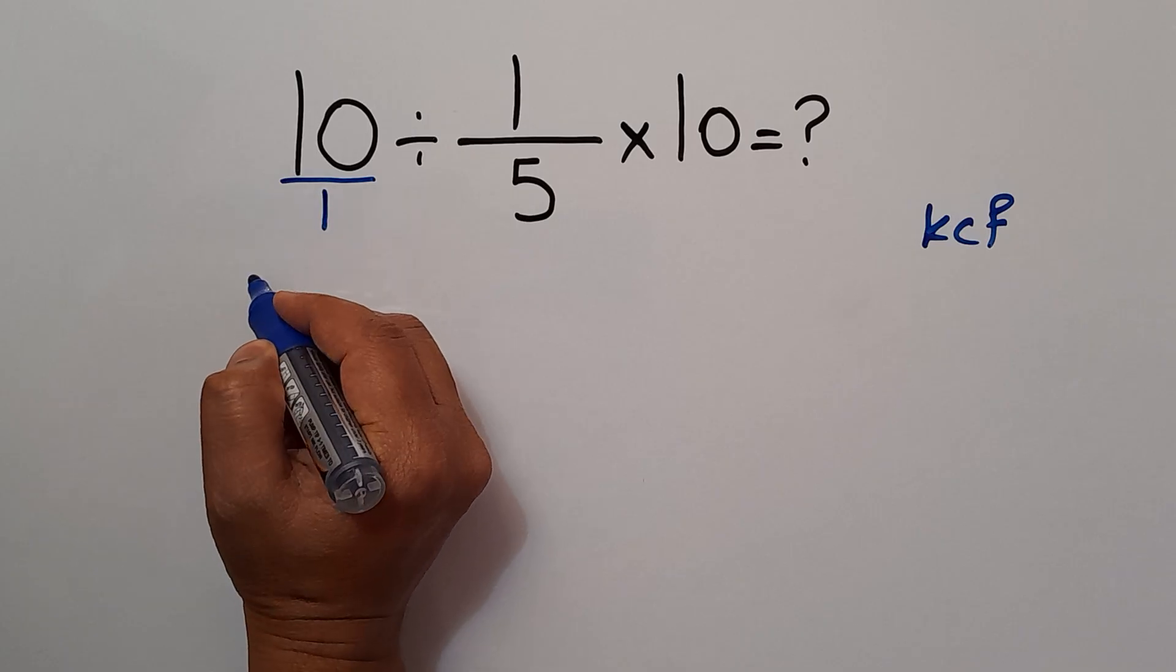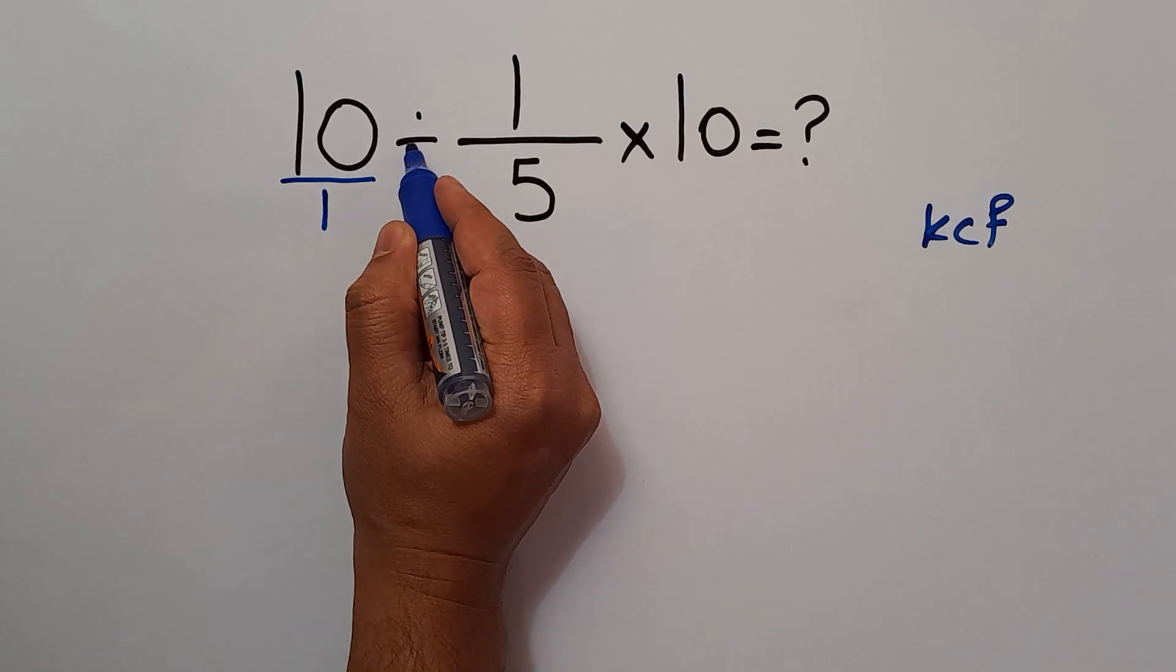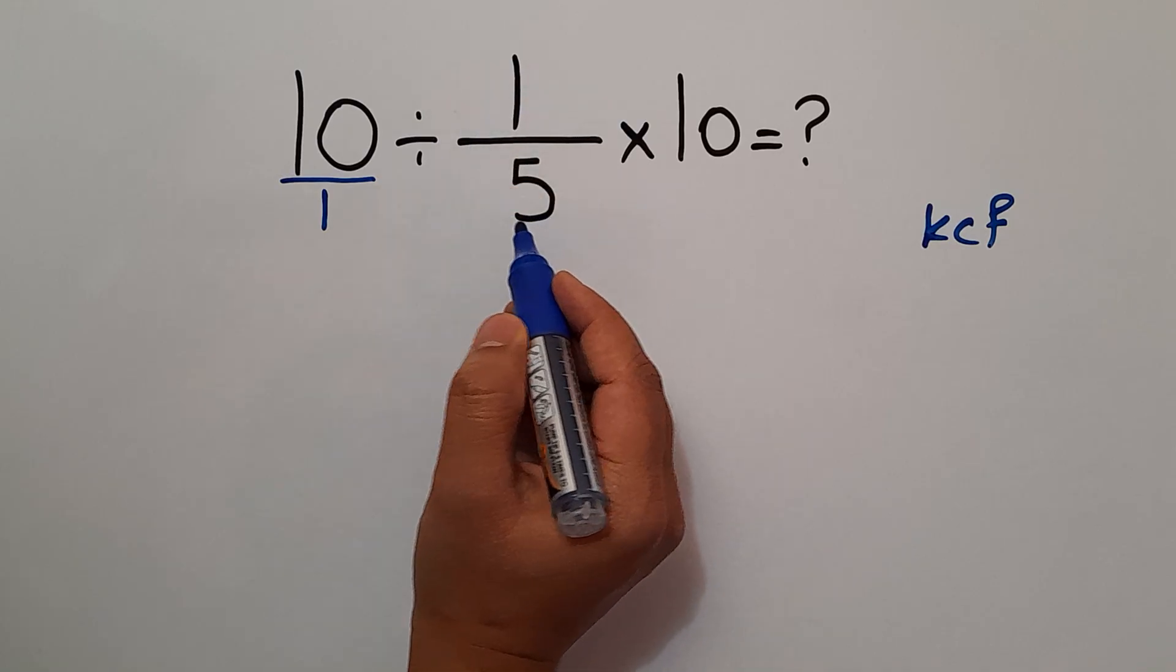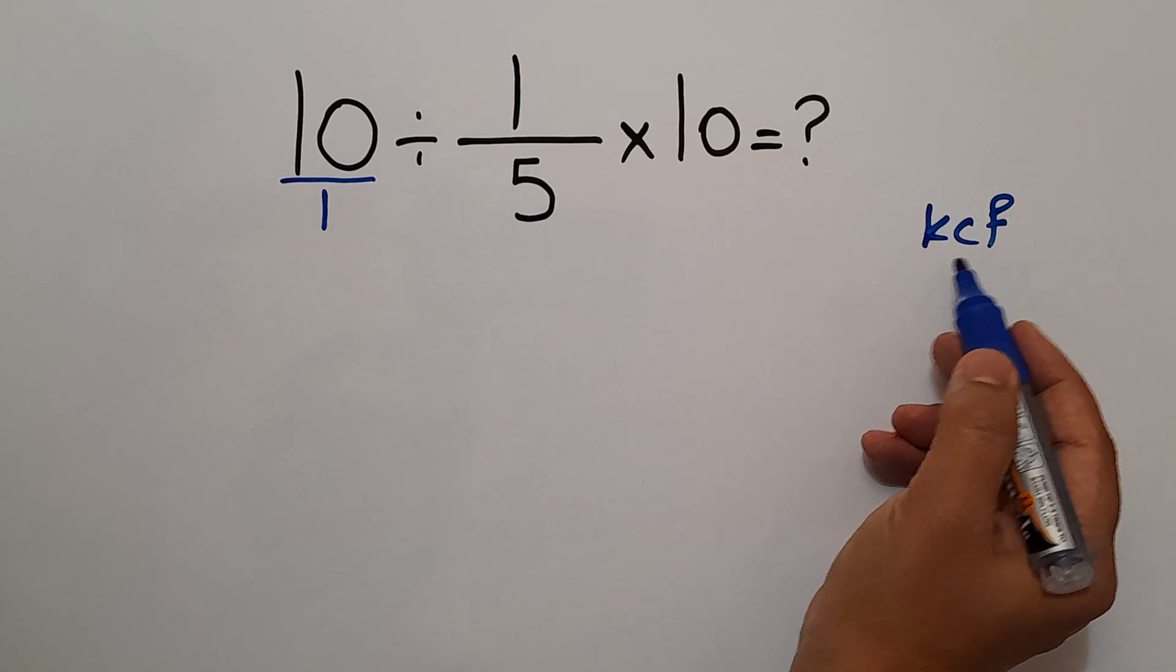Change division to multiplication, and then flip the second fraction. So according to this rule, we can write...